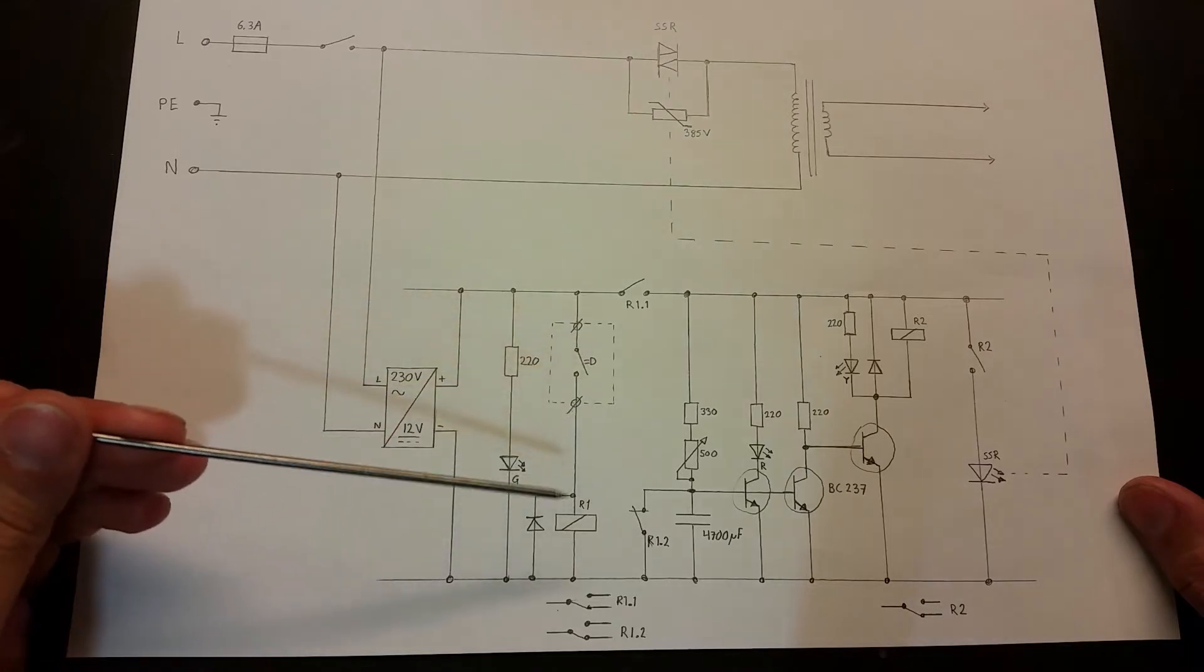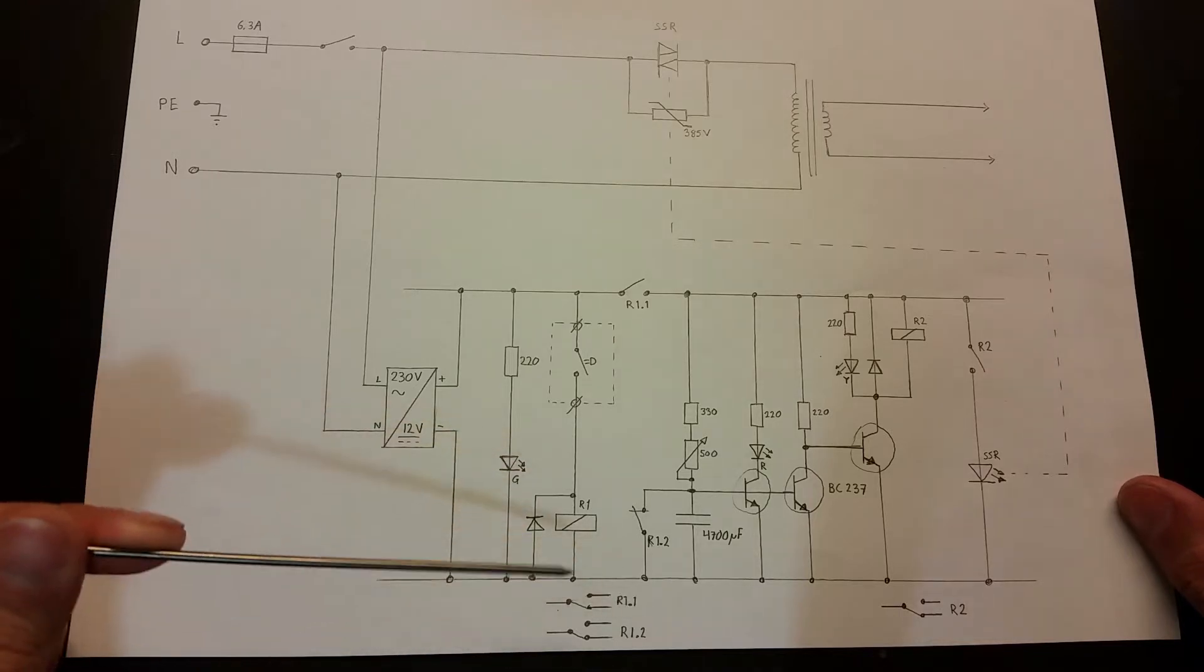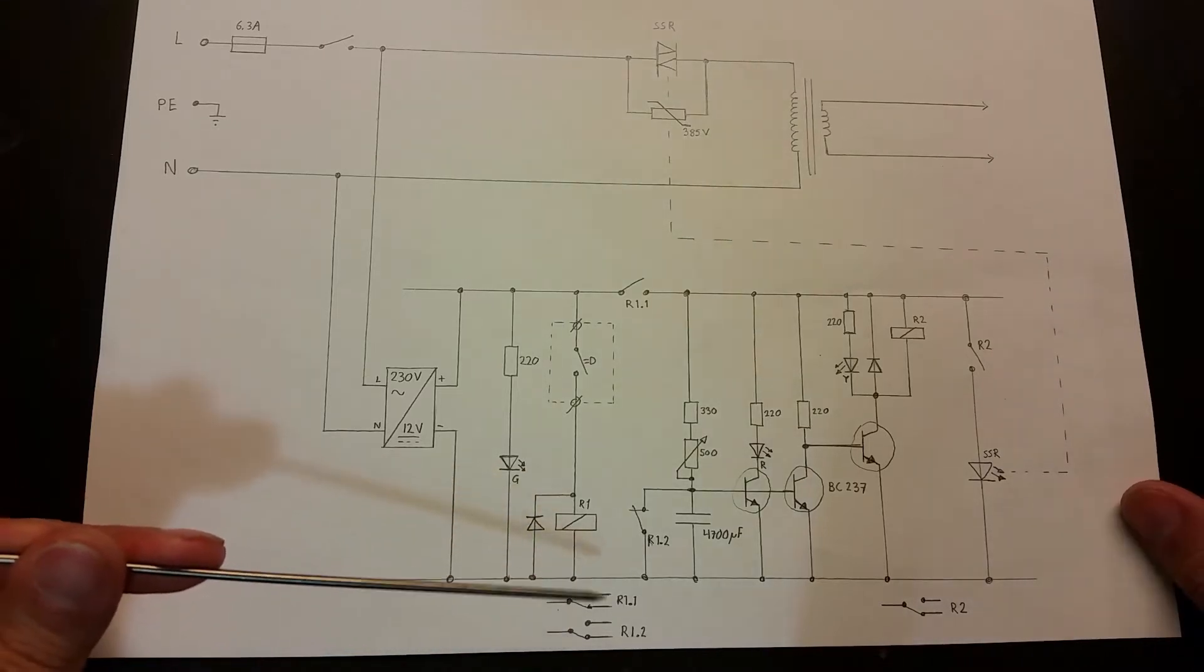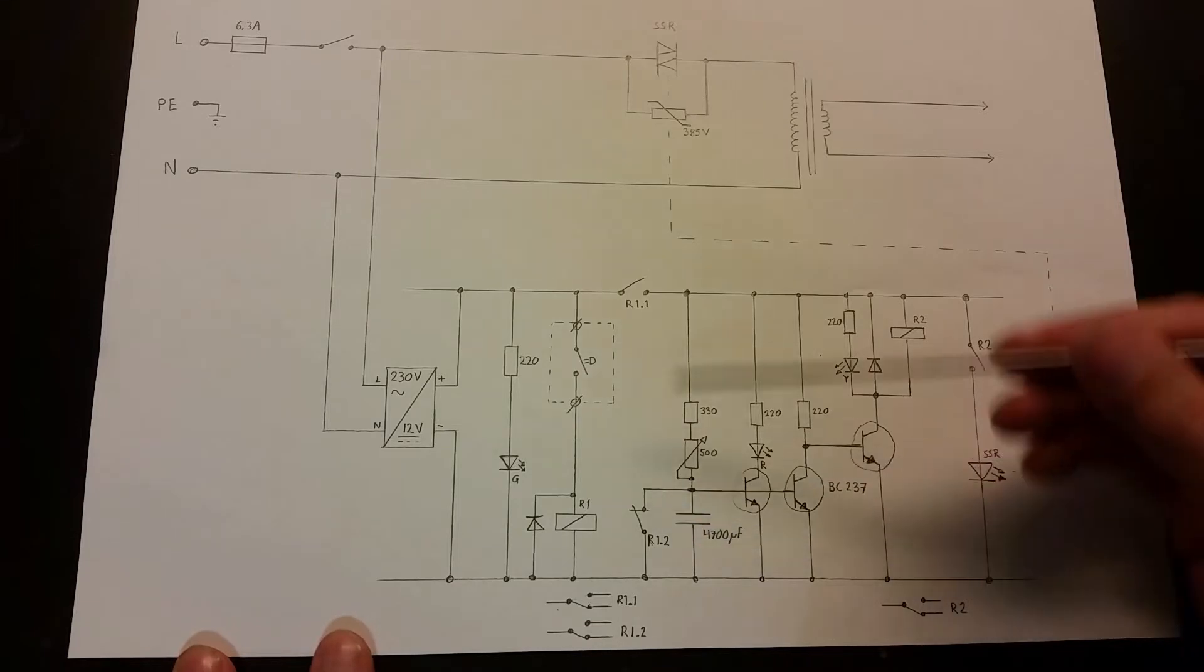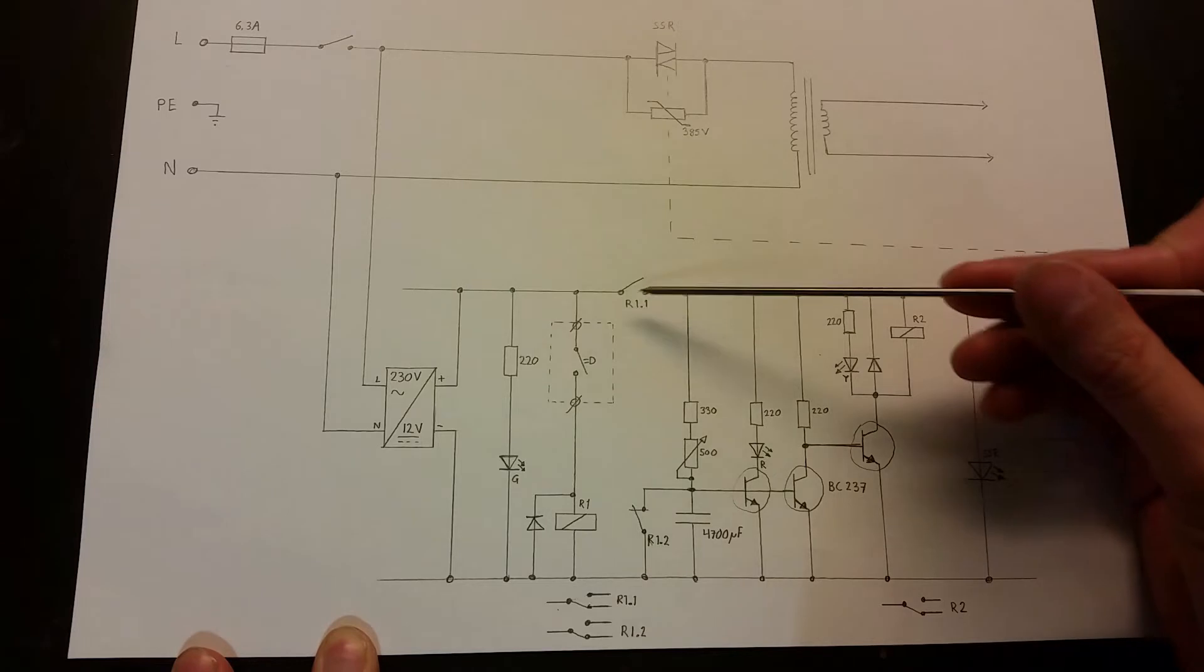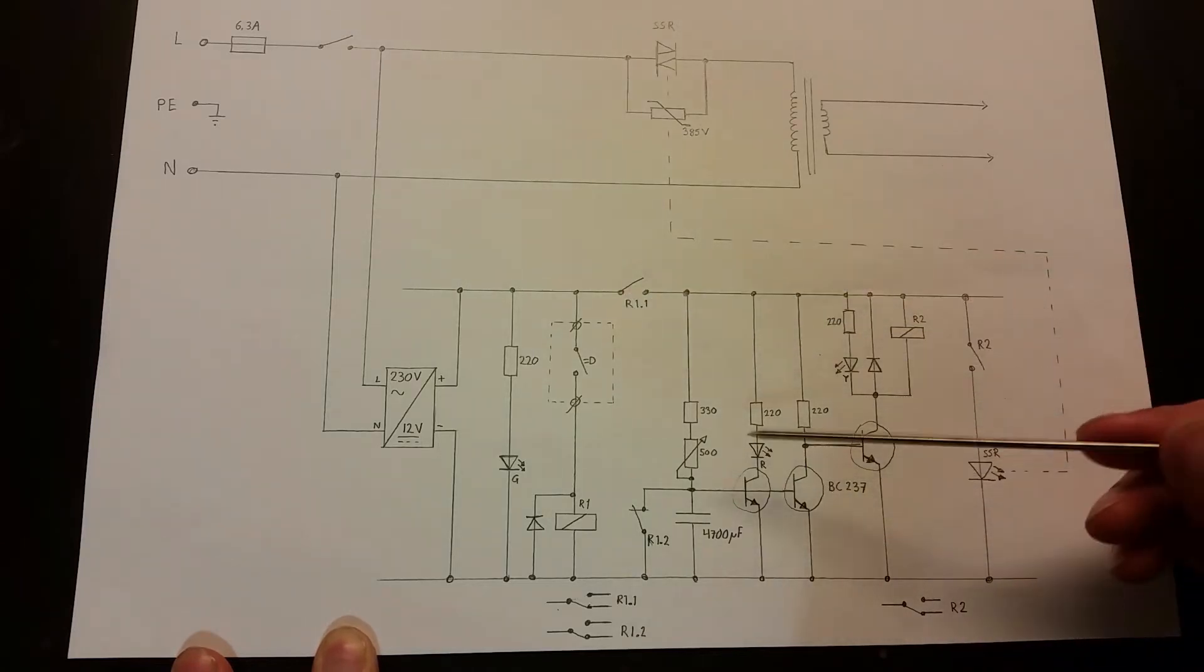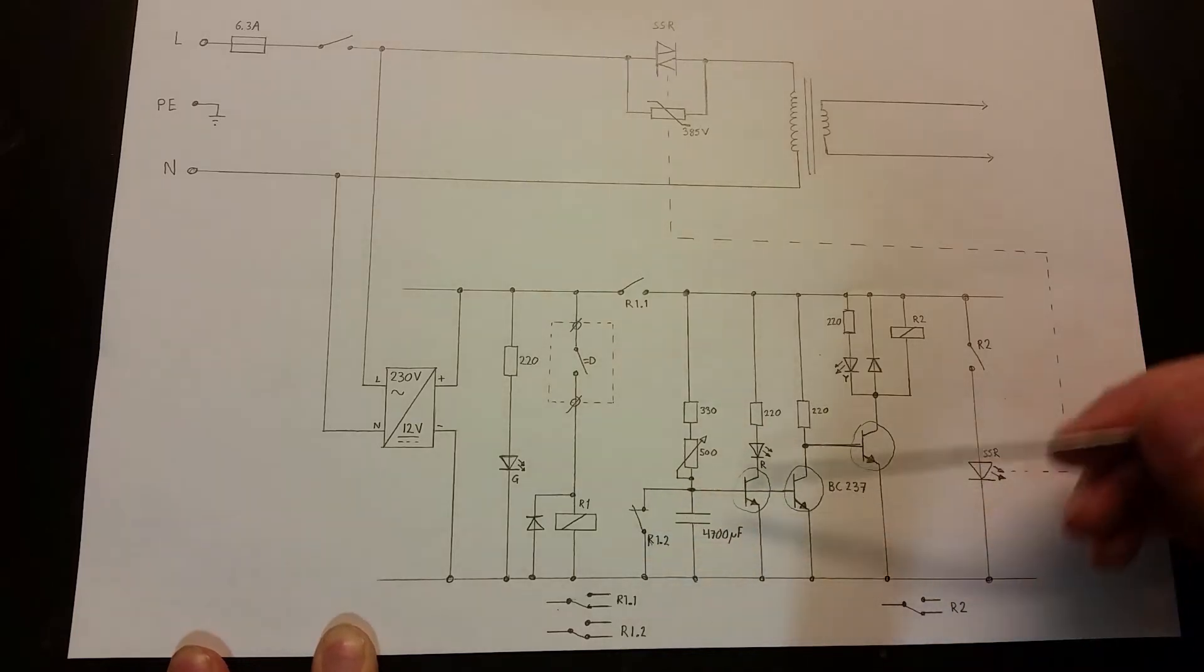I think this here is called a contact mirror - you can see how the contacts are located inside of the relay with R1.1.1 and R1.2 which are these contacts here. When you push the pedal down, this relay will turn on, this one will latch and let the current flow to this circuit here. This R1.2 is the discharge for the capacitor.